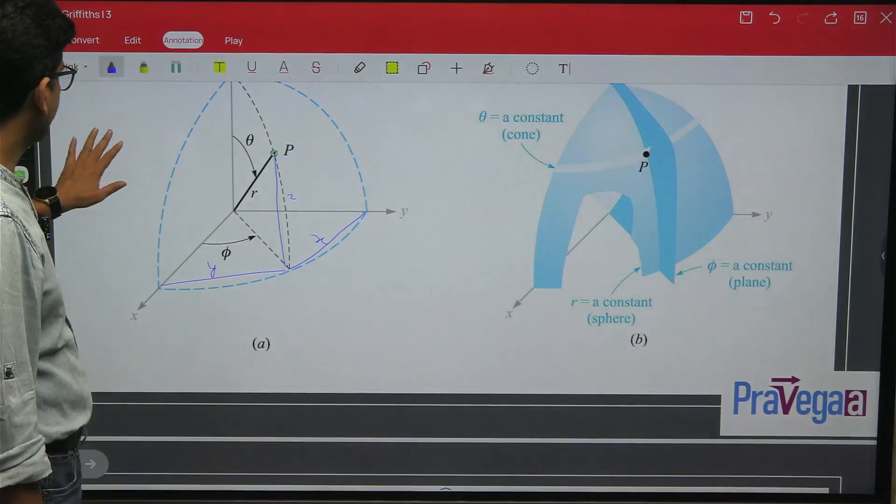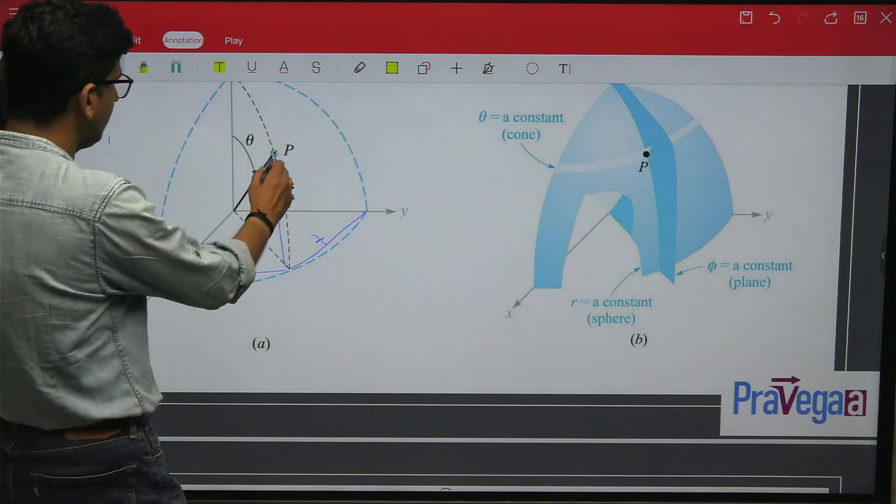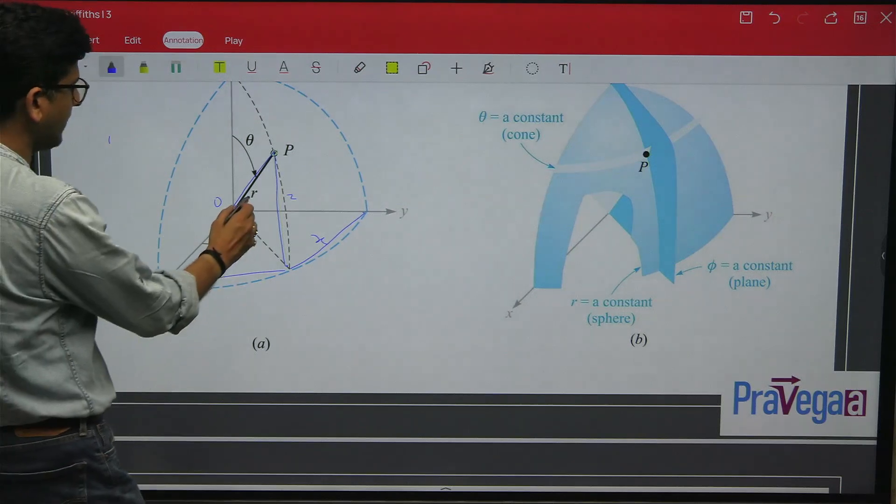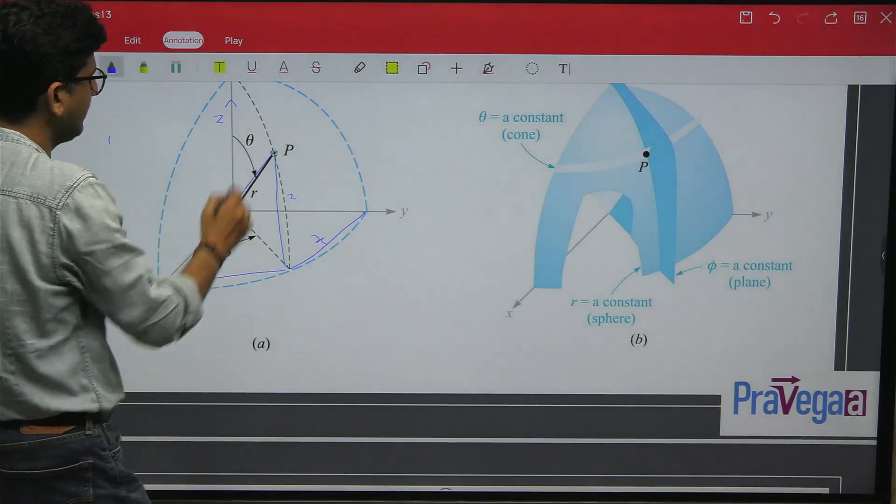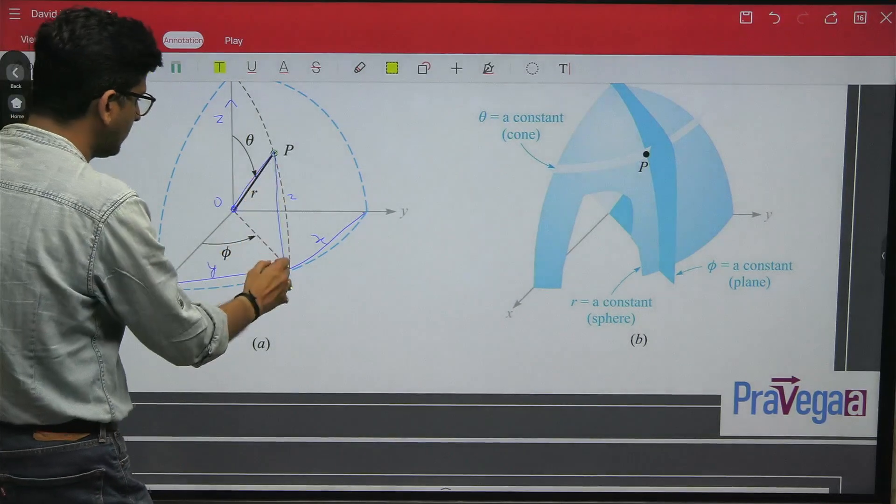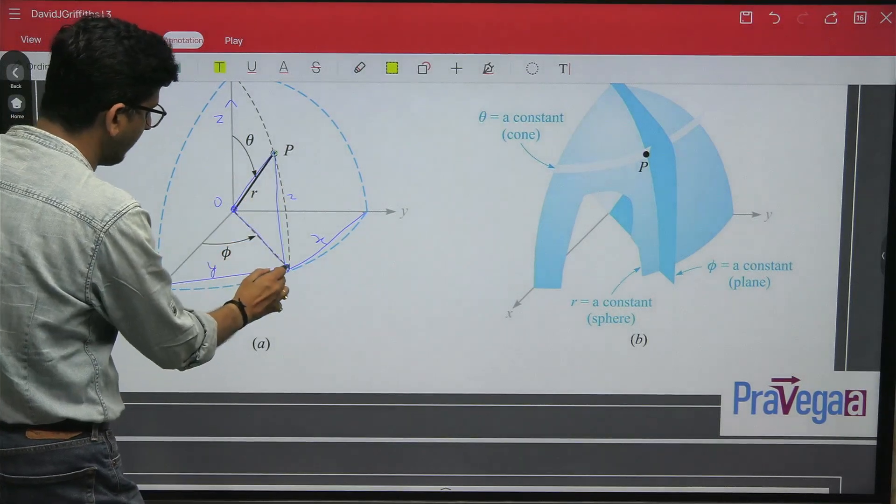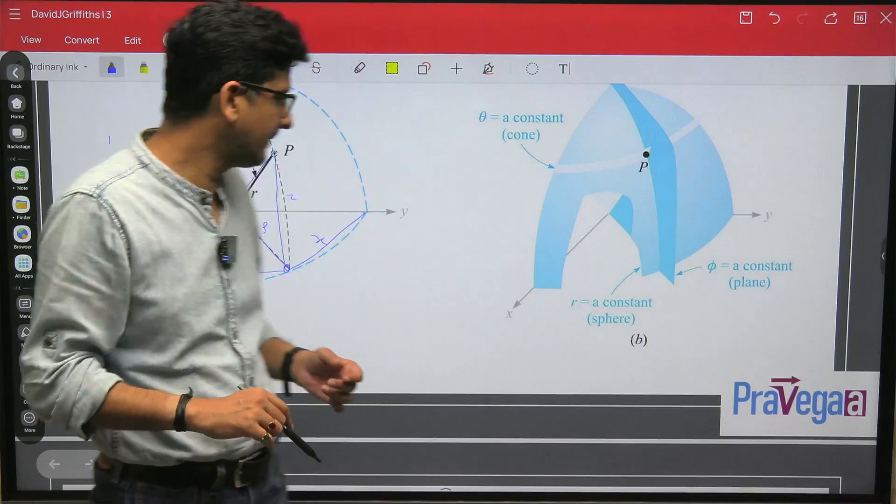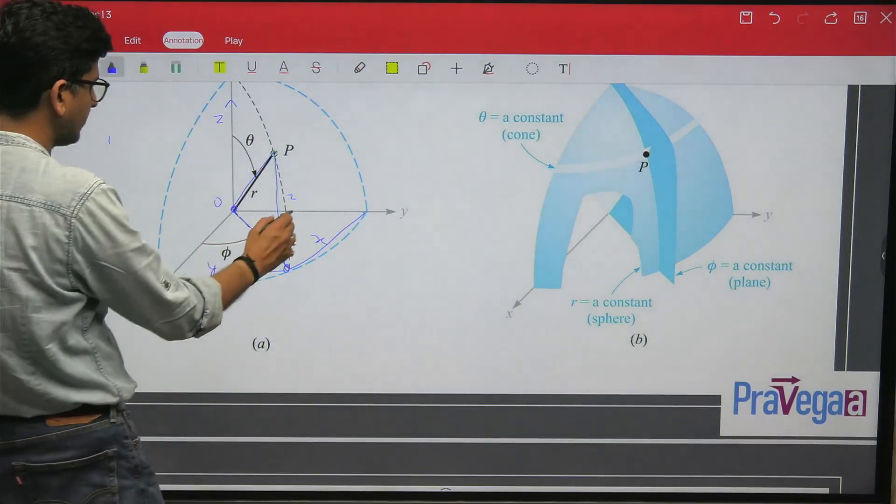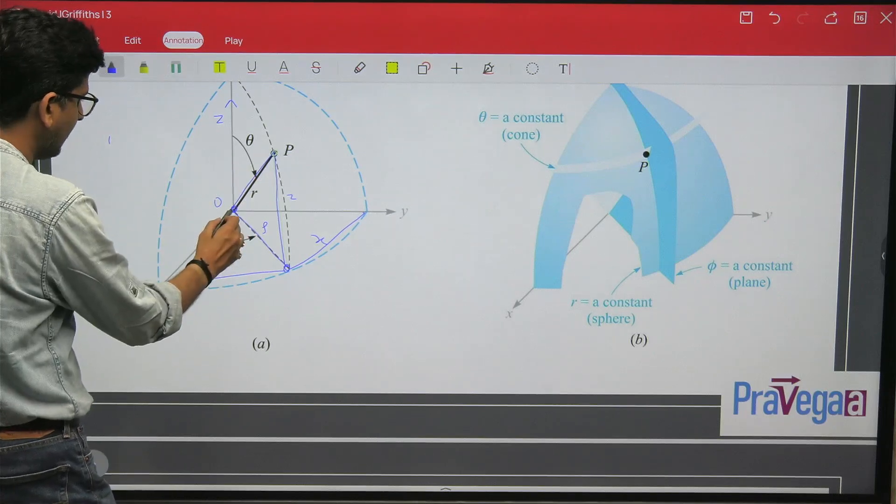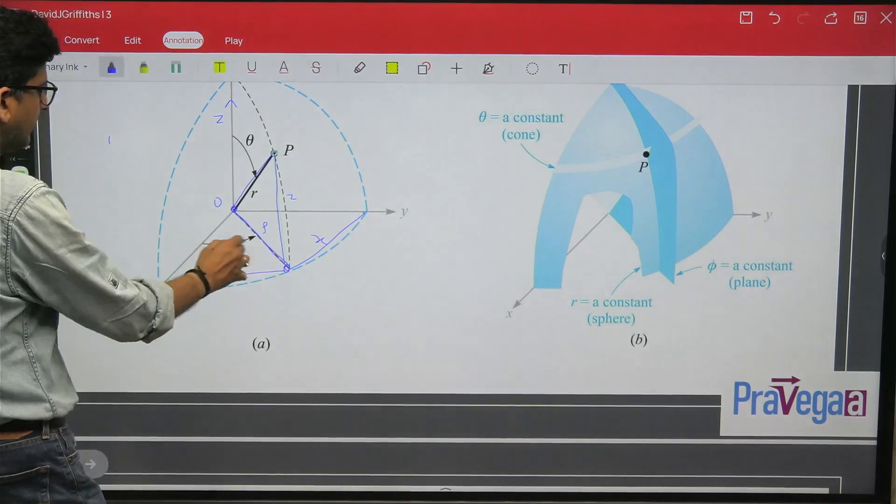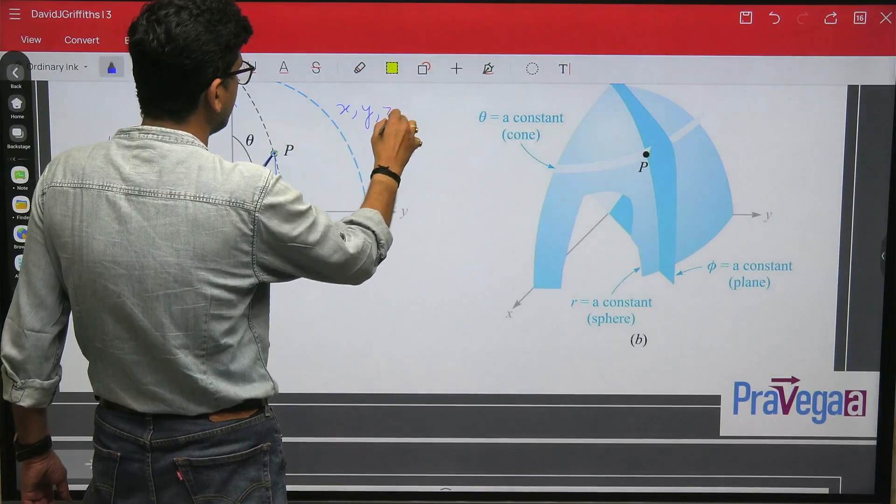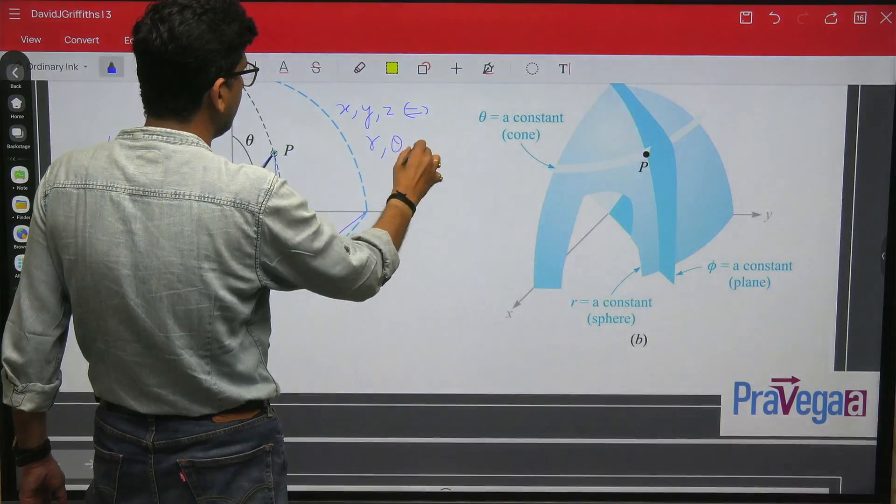Now just see what will happen. Just directly connect this point to the position vector, that will be R with Z axis. The angle made is theta. And when you put this on the X-Y plane, this vector we generally represent by rho. This is from the cylindrical coordinate system. If you remember, rho was there. So we have R, theta, and the angle made with the X axis and this rho vector is called phi. So your X, Y, Z is converted to R, theta, and phi.